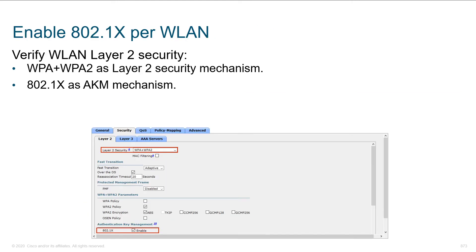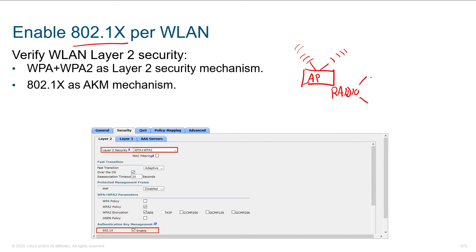802.1x is what we're going to leverage for network authentication. This isn't really a class on wireless, but I don't want to assume everyone has a background in it. When we look at an individual access point above you in the ceiling, remember that the access point has a radio — or typically multiple radios — inside it. This radio is going to participate in different networks, at least 2.4 GHz and 5 GHz.